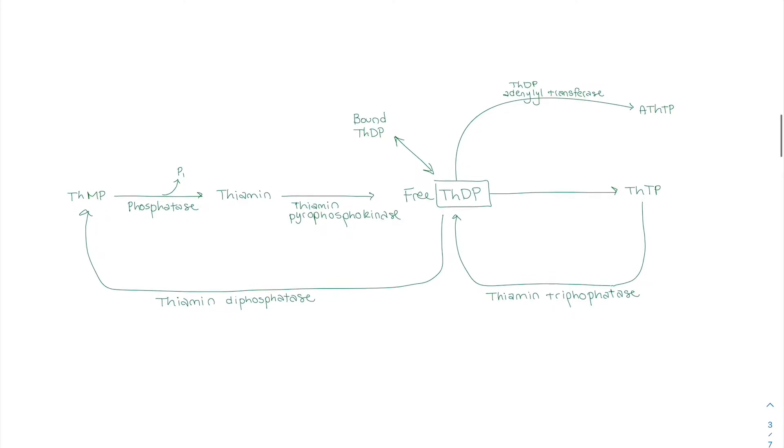And before I move on, the primary thing we need to know is that it's almost kind of able to be recycled. If we have the TDP, we can make it into thiamin. Thiamin can go into this TDP. Know these three main enzymes.